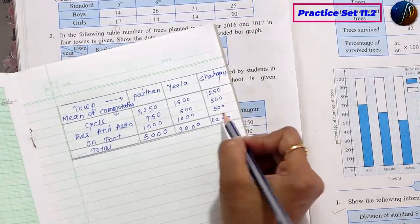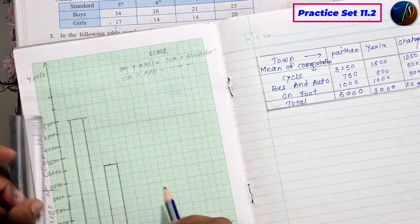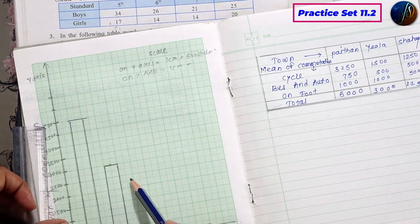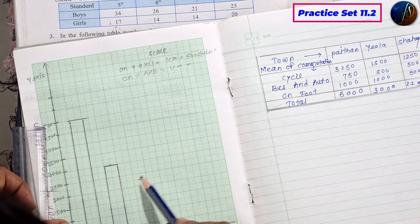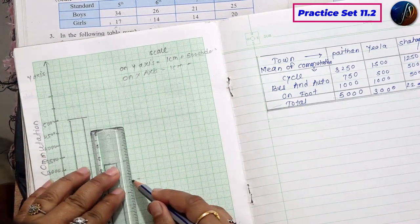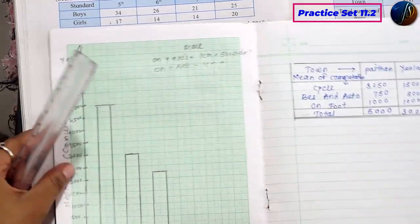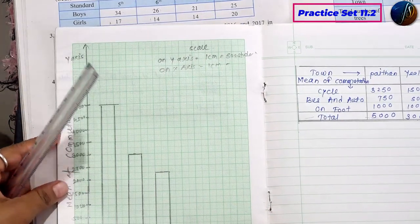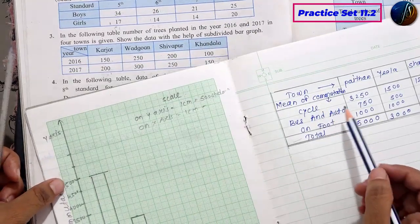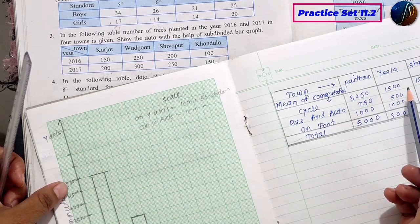In Shahapur, the value is 2,250. We have multiple different cycles and then we have multiple cycles on foot.